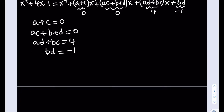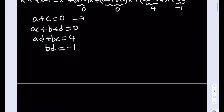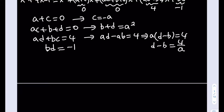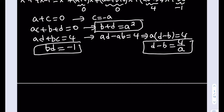We can eliminate c by replacing it with negative a. Then ac plus b plus d equals zero becomes b plus d equals a squared. Replacing c with negative a in ad plus bc equals 4 gives ad minus ab equals 4, and pulling out a: a times (d minus b) equals 4. So d minus b equals 4 over a. We now have three equations involving b, d, and a: b plus d equals a squared, d minus b equals 4 over a, and bd equals negative one.